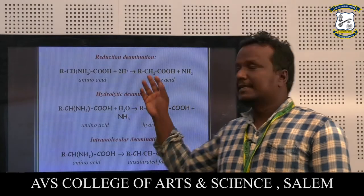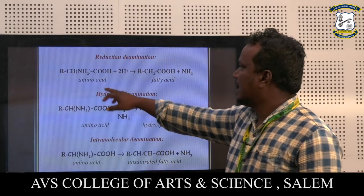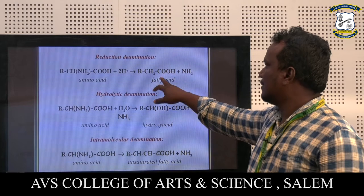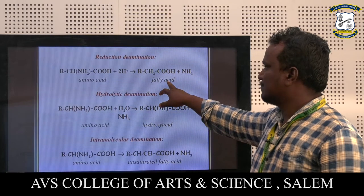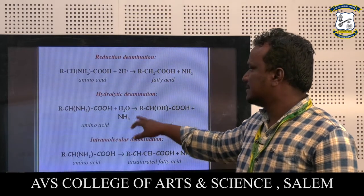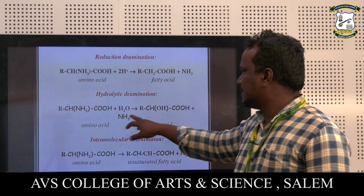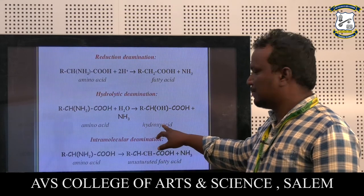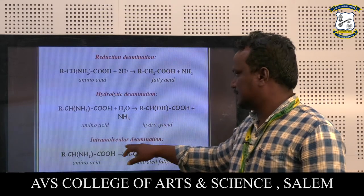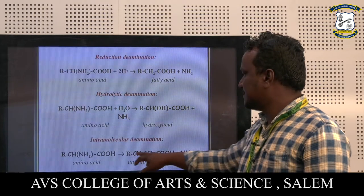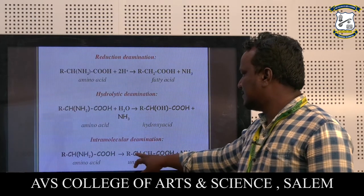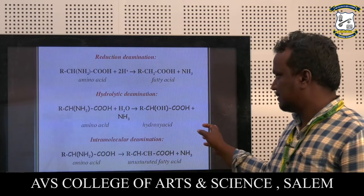In reductive deamination, the amino acid is reduced at the amino group to form a fatty acid. In hydrolytic deamination, the amino group is converted to a hydroxy acid. And in intramolecular deamination, the amino acid is converted to an unsaturated fatty acid.